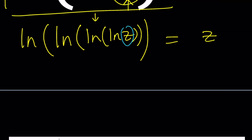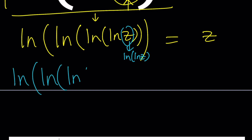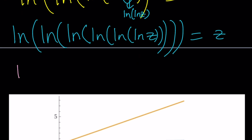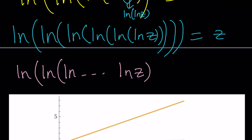If you continue to do this — replace z with ln of ln z — that's going to give you more ln's: ln of ln of ln of ln of ln of ln of ln z. We're going to have five ln's and that should equal z again. And if you keep doing it, hopefully at some point you'll be convinced that this is actually going to continue forever: ln ln dot dot dot dot, and then at some point you're going to have ln z, and the last parenthesis equals z. So you're going to have this infinitely many times — an infinite set of parentheses and ln's.